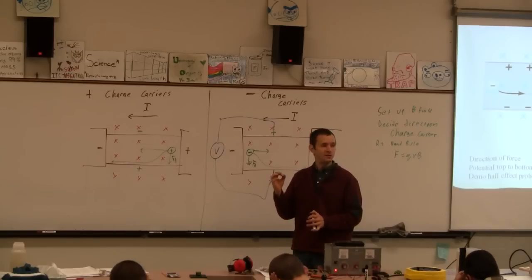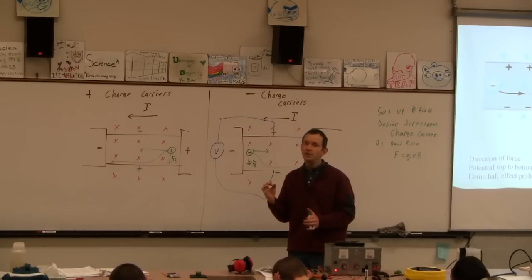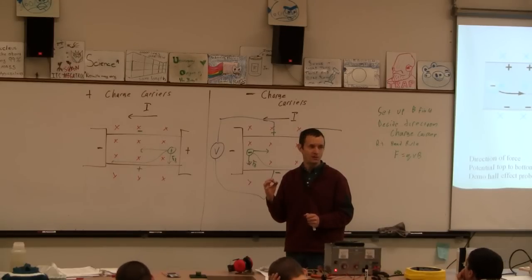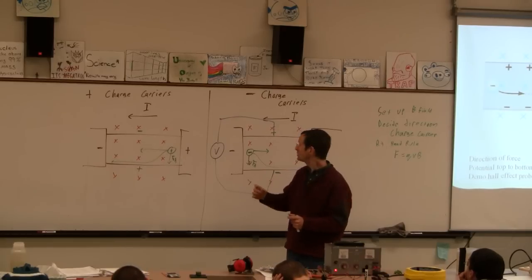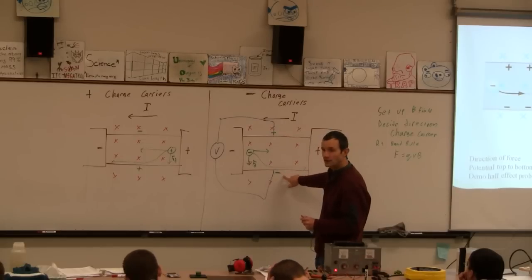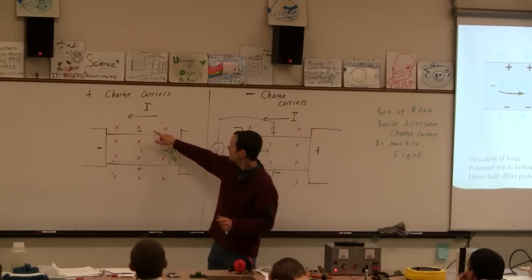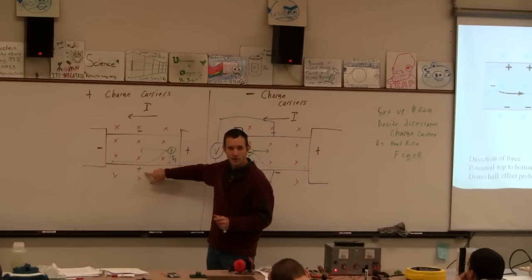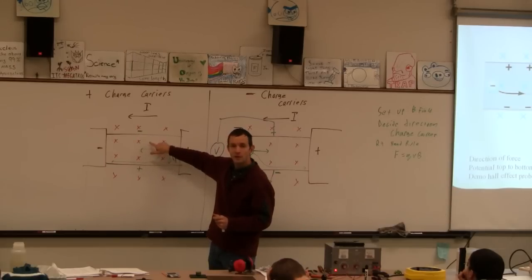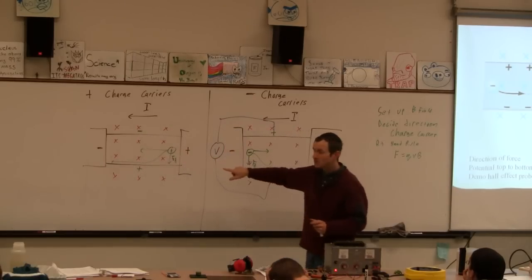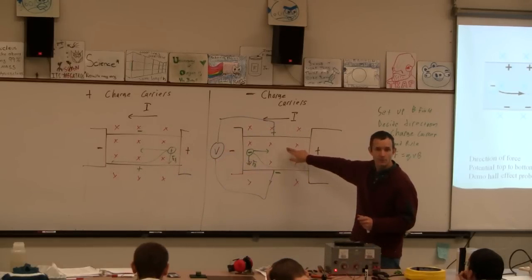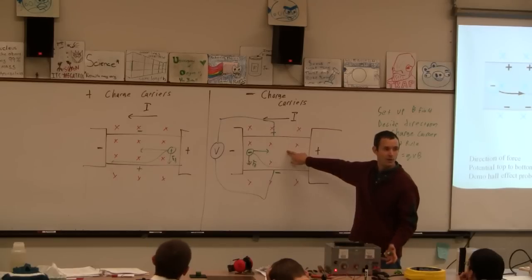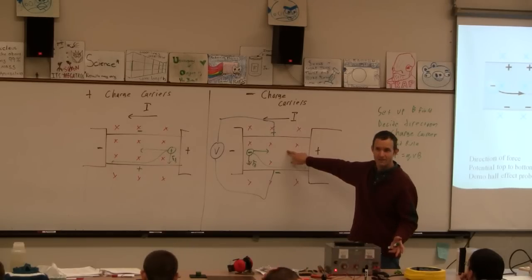And the top will be negative. Is this a way that you can tell, without even knowing there are electrons and protons, that the charge carriers are actually negative? Yes — the potential is either positive on top and negative on the bottom, or negative on top and positive on the bottom. This does happen with wires, therefore we know the charge carriers are negative.